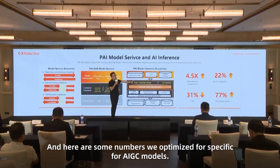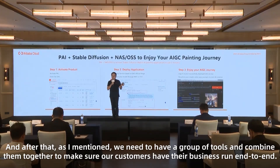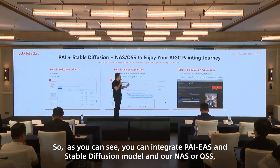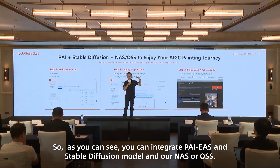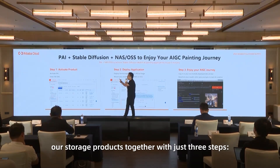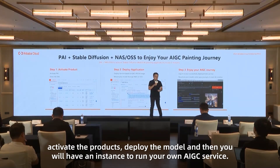There are performance numbers optimized specifically for AIGC models. To make it easy, you can integrate PI EAS with a Stable Diffusion model and our NAS or OSS storage products. With just three steps — activate the products, deploy the model, and you will have an instance running your own AIGC service.